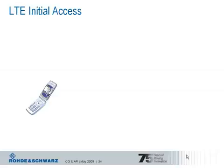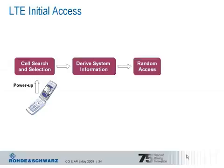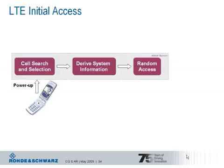Let's assume we have an LTE-capable terminal. The first thing we need to do is to power up the device. Right after powering up, the UE will start with the cell search and cell selection procedure, followed by derivation of system information and execution of the random access procedure. This procedure is summarized and known as LTE initial access.